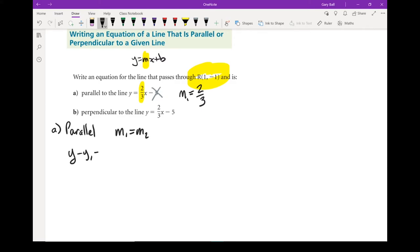y minus y1 equals m times x minus x1. So all we need to be able to do this point, so all we need to be able to work with this formula is a slope and a point. Well, guess what we've got? Slope and point. Let's put it in.